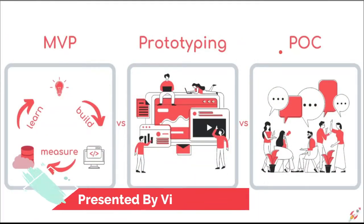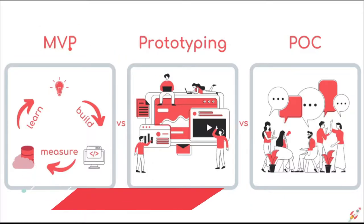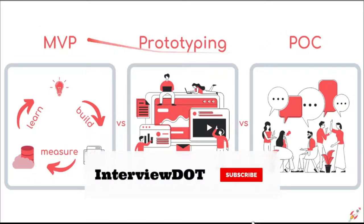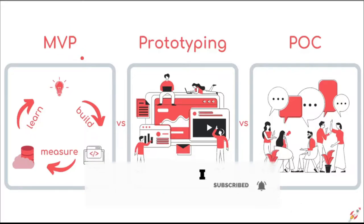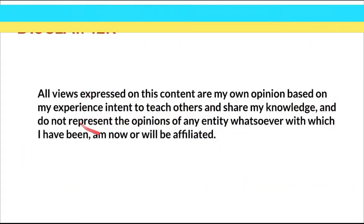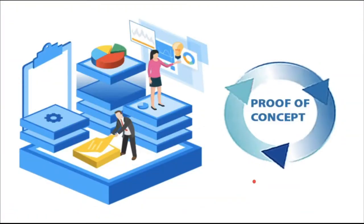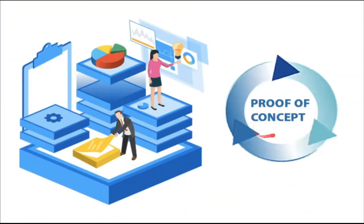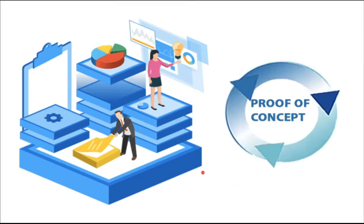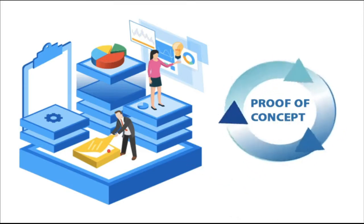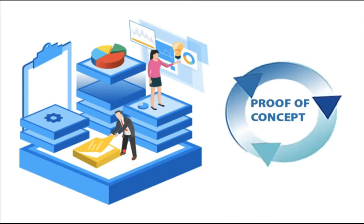Hi friends, in this video I'm going to talk about the difference between POC and MVP. I have worked on multiple POCs and MVPs in my career and I would like to share my learnings. First of all, POC means proof of concept. The purpose of the proof of concept is to check whether an idea is feasible or not.